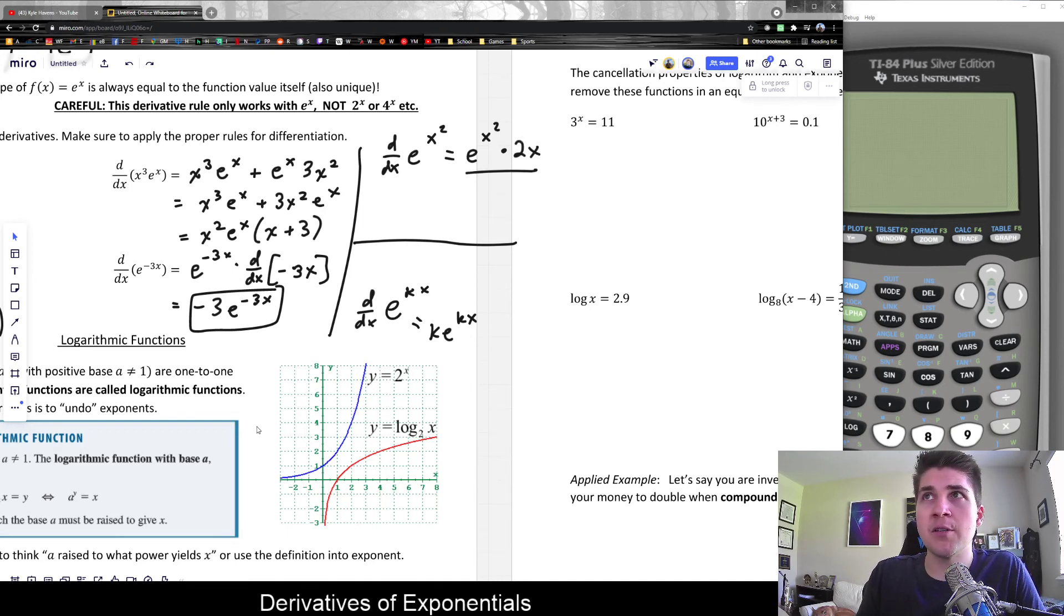But what I wanted to just mention is if there's just a multiplier on x, that will always pass through and drop in front. As you can kind of remember this, the derivative of e to the kx is drop the number, keep e to the kx the same. It's sort of similar to the power rule.